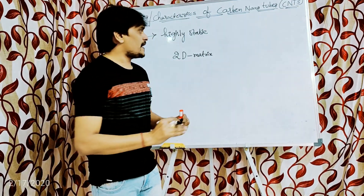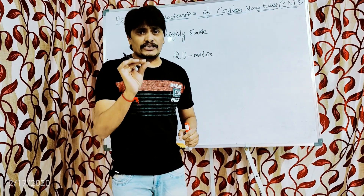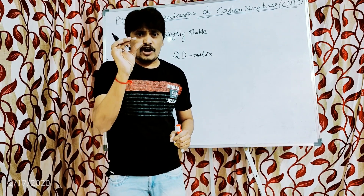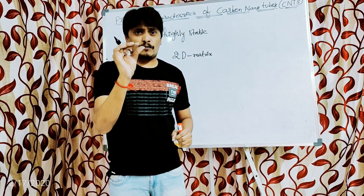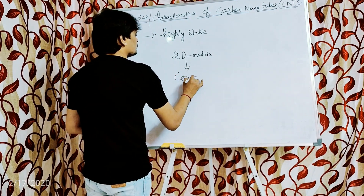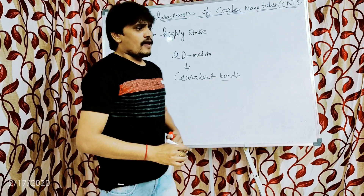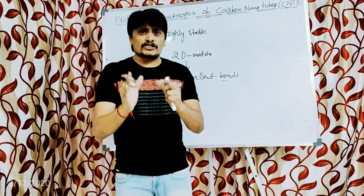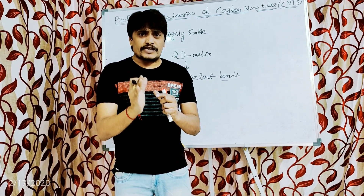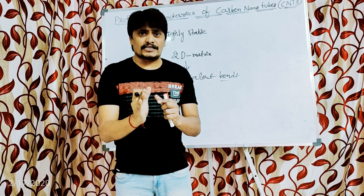The bonds present between adjacent carbon atoms are covalent bonds. Now, we know that covalent bonds are generally weaker than ionic bonds. So why do we say that carbon nanotubes, even though they possess covalent bonds between adjacent carbon atoms, are highly stable?